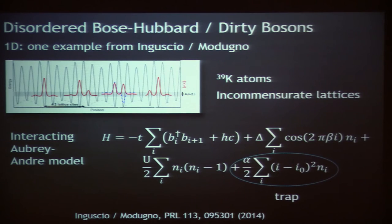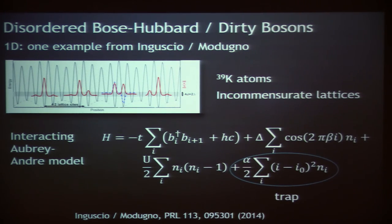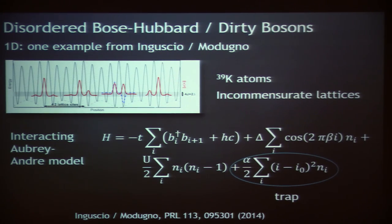This is a 2014 paper — they have papers on this going back several years. It's a nice paper to look at for all the different types of measurements people do to observe whether the system localizes when interactions are present. It has a nice theory by Terry Giamarchi in it as well. Now it's not going to be a diffusion or expansion experiment anymore, because if you want interactions to play a strong role, you need the atoms to be on top of each other — so you keep the trap on and do some other kind of measurement to probe localization. If you turn the trap off, the interaction term would not play any kind of role anymore because the density would get too low very quickly.